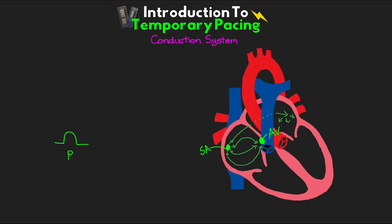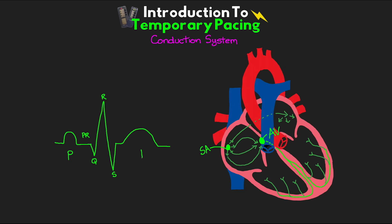This delay is represented by our PR interval on the EKG tracing. The bundle of His is a high-speed pathway and it branches to the left and right bundles going to each of the ventricles, which eventually turns into the Purkinje fibers that propagate the entire ventricle and organize coordinated contraction. This is what we see as our QRS complex on the tracing. Depolarization of the ventricles is observed in the T wave, while atria depolarization is overshadowed by the QRS complex, which is why we don't see it.